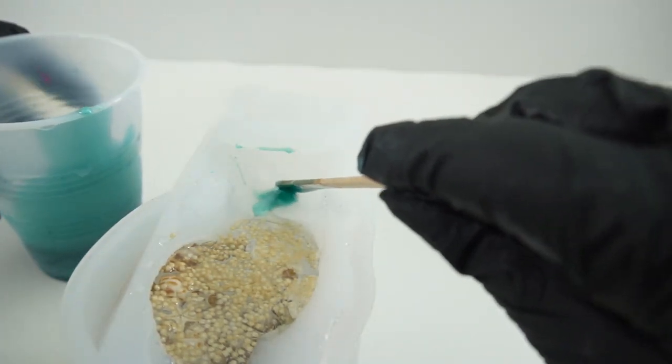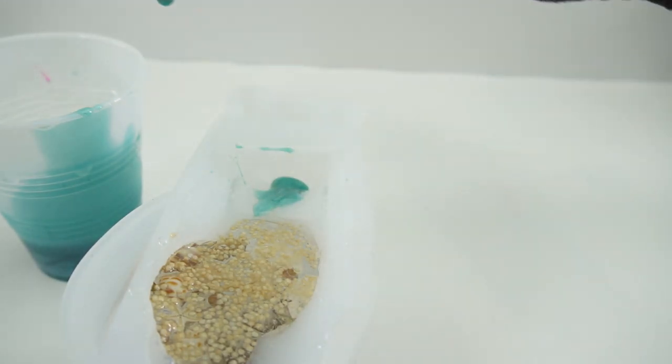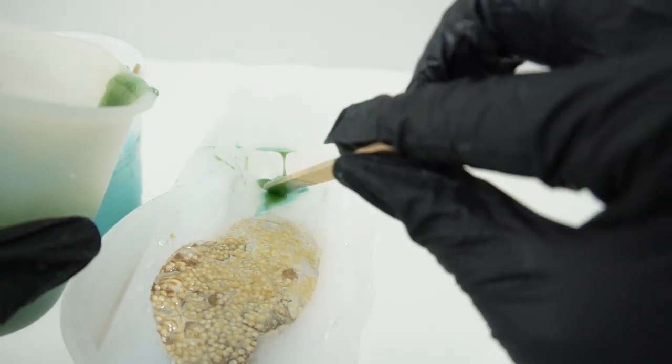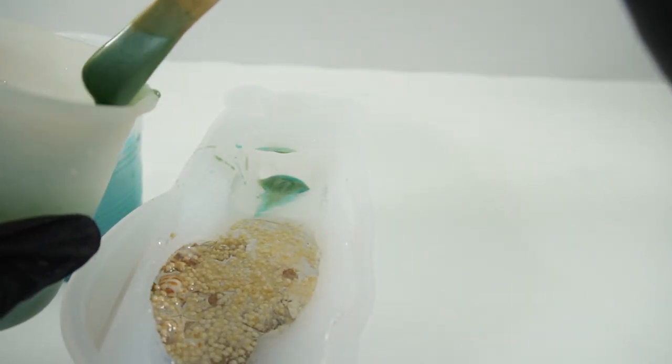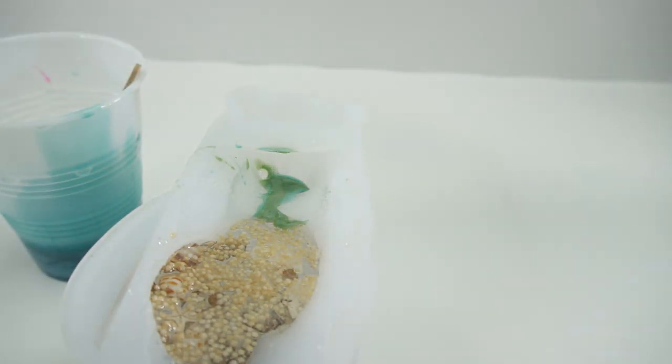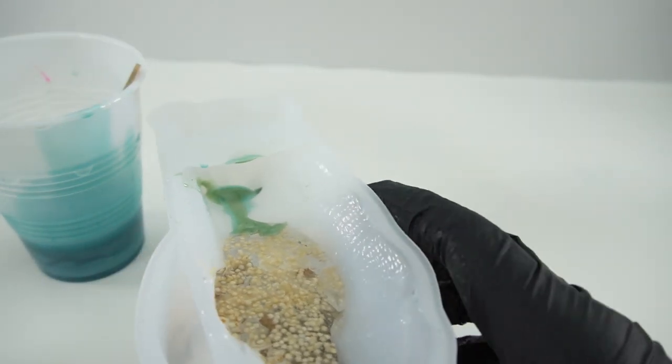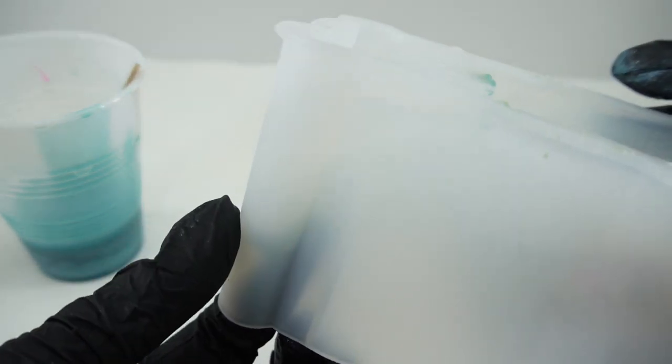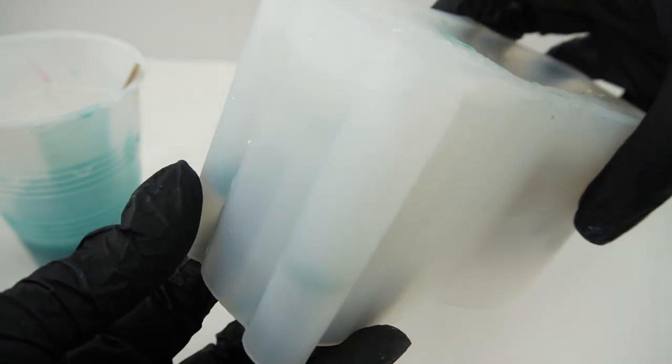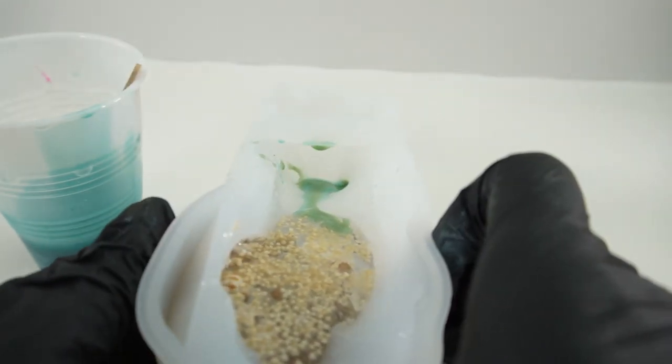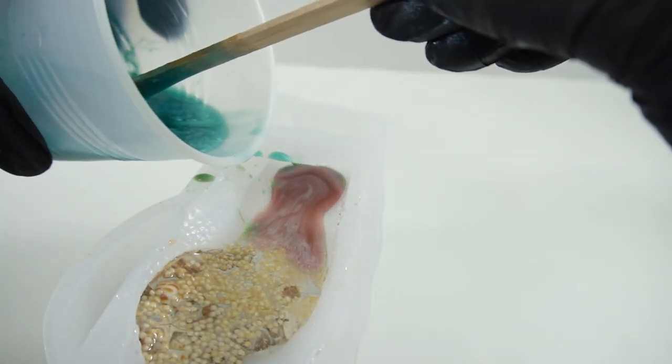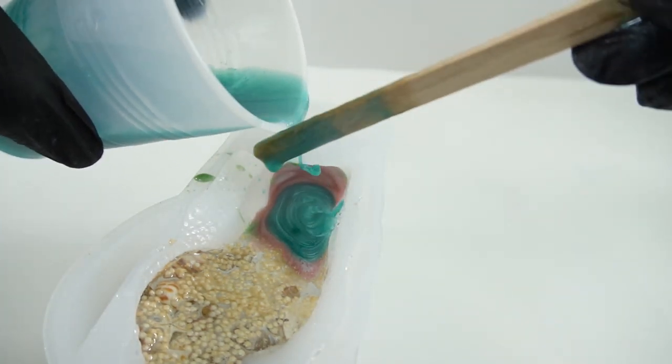Okay, let's start with the teal and pour it a little bit down this way so it goes into the antenna. Underneath I'm going to give it a little squeeze to make sure the antennas are filling up.